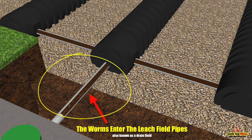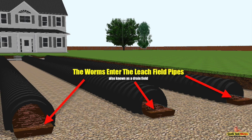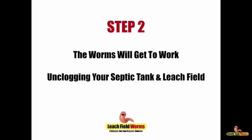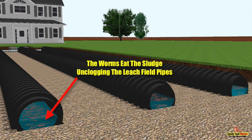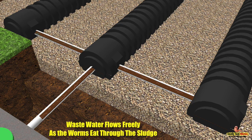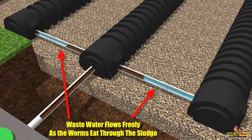As the worms continue to breed and multiply, they'll make their way through the arteries, through the sludge, deeper and deeper into the drain field. Once the worms have started to saturate the drain field, they start to work their magic. They get to work eating the sludge, unclogging those drain field pipes, which allows the wastewater to start flowing freely. These worms will continue eating the sludge, breaking it down and clearing it from the drain field pipes.